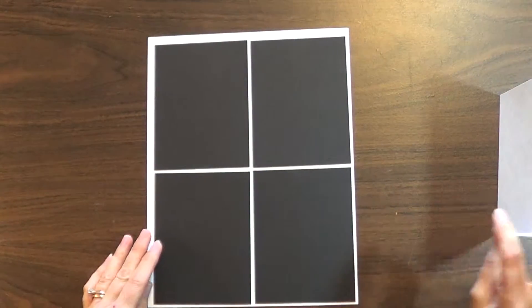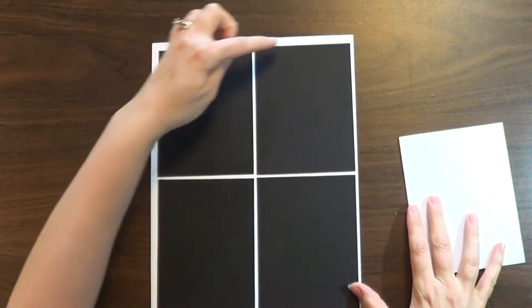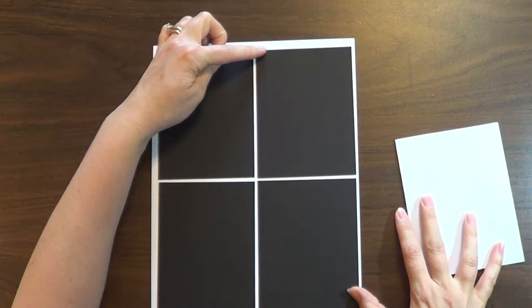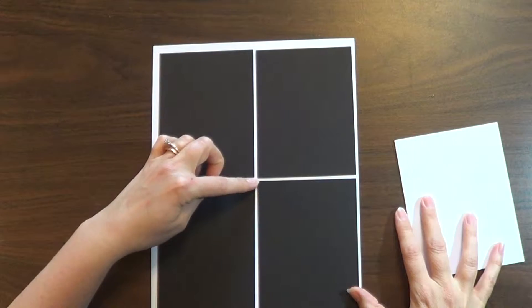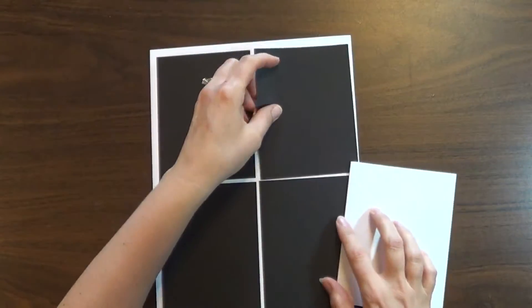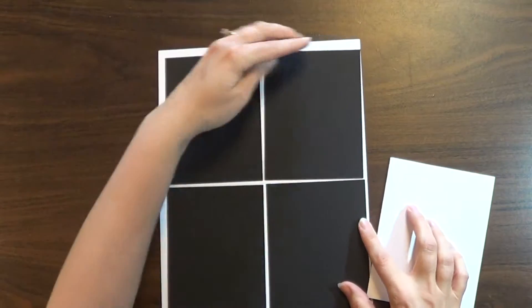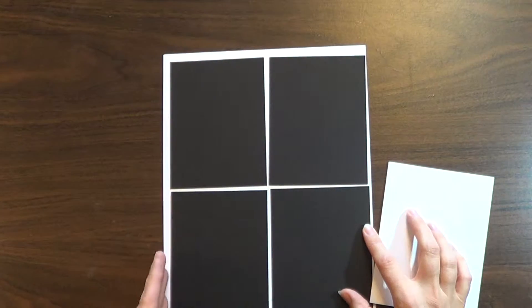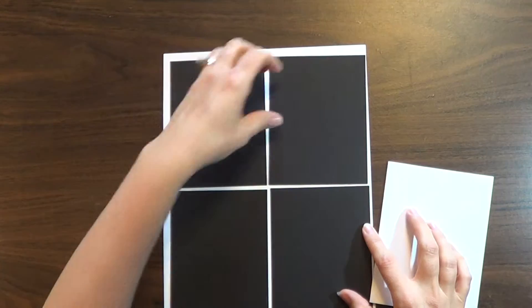Now, for your next layer down, if you make each piece four by five and a quarter, whereas this is four and a quarter by five and a half, you can get four off your piece of cardstock. So you're basically going to cut a half inch off of one side and a half inch off one end and then cut it into quarters.